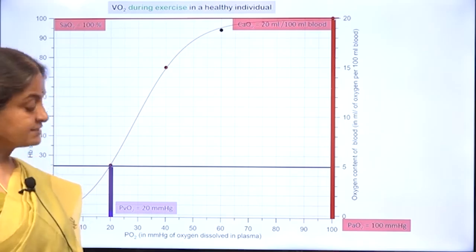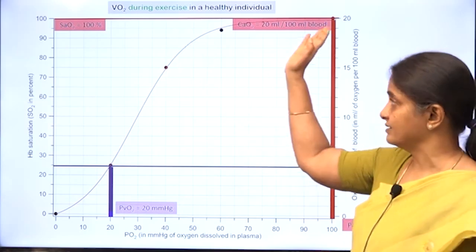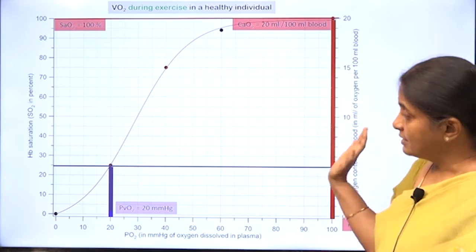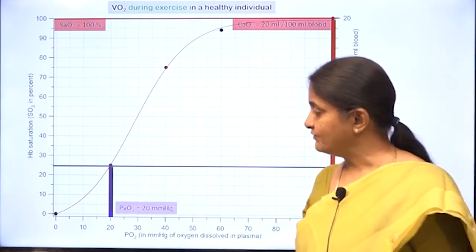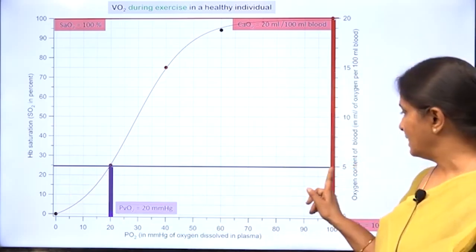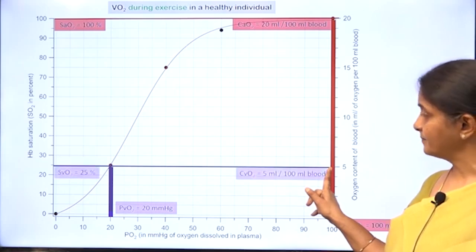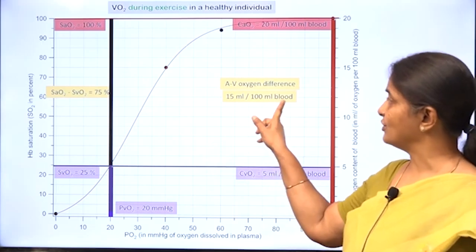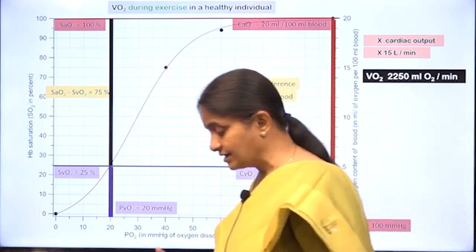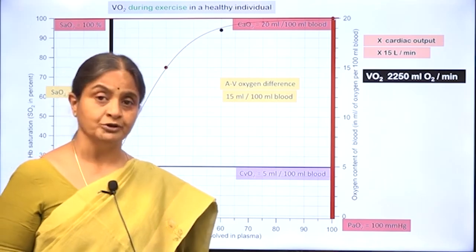During exercise in a healthy individual, arterial oxygen saturation cannot exceed 100%, but tissues extract far more oxygen — venous oxygen saturation drops to 25%, giving a venous oxygen content of 5 ml per 100 ml blood. The AV difference becomes 15 ml per 100 ml blood. Multiplied by the increased cardiac output, this yields an oxygen consumption of about 2.2 liters per minute.